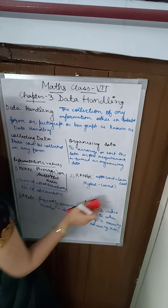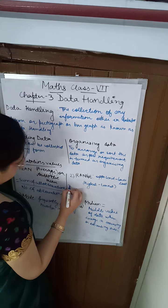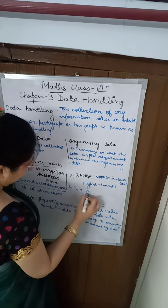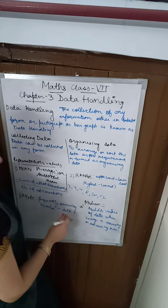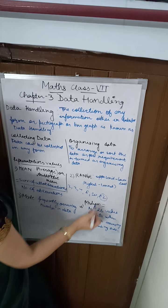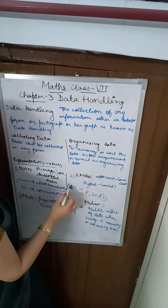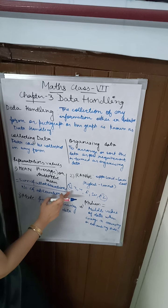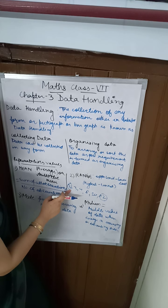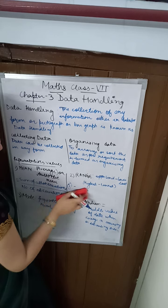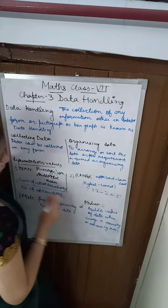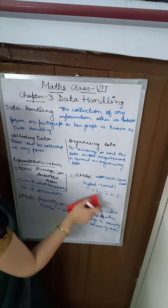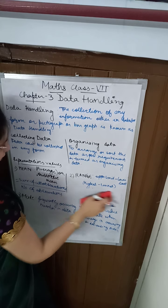Now, what do you mean by range? For the same data — 2, 3, 4, 8, 10, 12 — the range is whatever the highest number minus the lowest number. Here the lowest is 2 and the highest is 12, so 12 minus 2 equals 10. The range will be 10. Highest minus lowest is known as range.